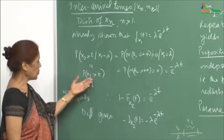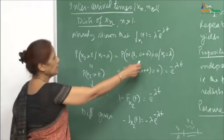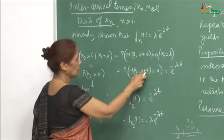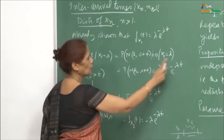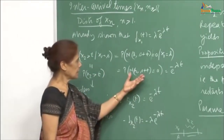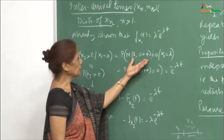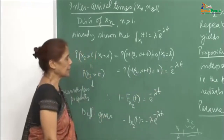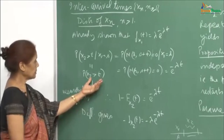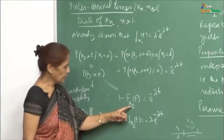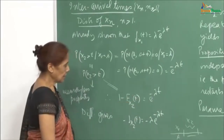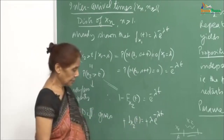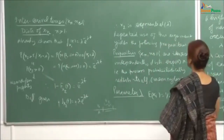By the memoryless property, P(X2 > t | X1 = s) equals the probability of no arrivals in the interval (s, s+t), which is e^{-λt}. Writing this as 1 - F_{X2}(t) = e^{-λt} and differentiating, we get f_{X2}(t) = λe^{-λt}. So X2 also has an exponential distribution with parameter λ.